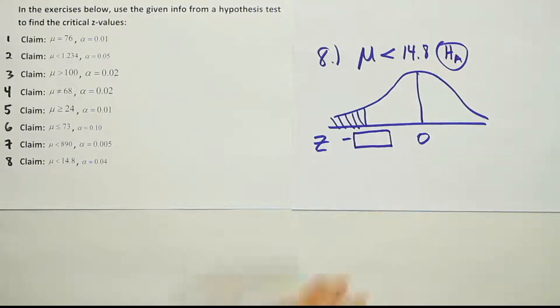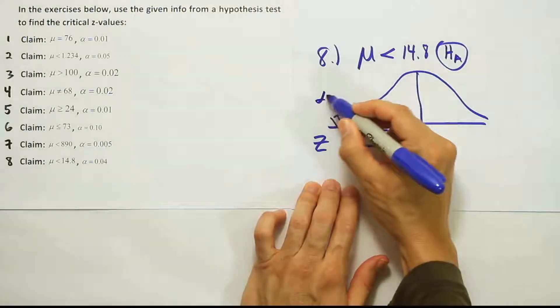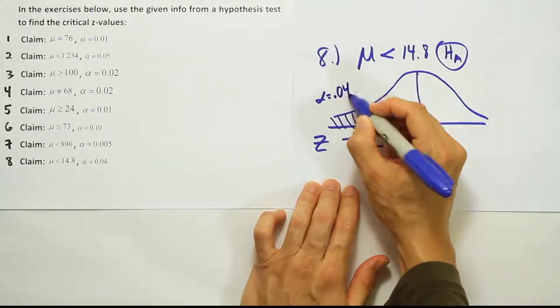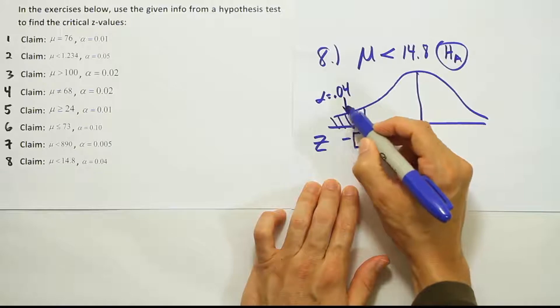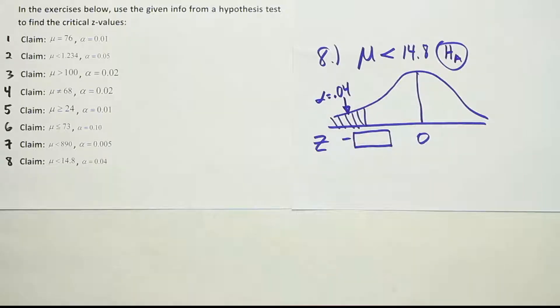we're going to look up alpha 0.04. So alpha equals 0.04. That's 4% in this tail. That's not one of the values you can find on your t-table, at the top of your t-table. So that means we must use the z-table in this case.